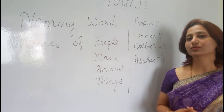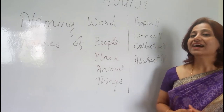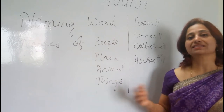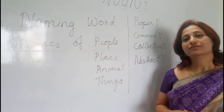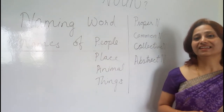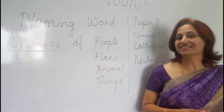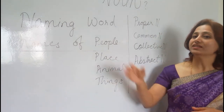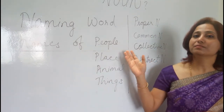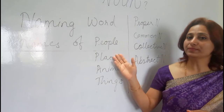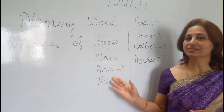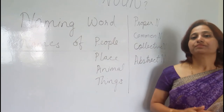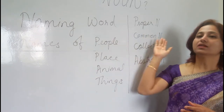Each of us has a name, and things, products, and places also have names. We have all been playing the game Name, Place, Animal, Thing in school with our friends. So a noun covers persons or people names, place names, animal names, and thing names.